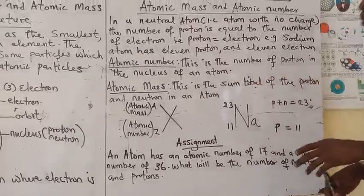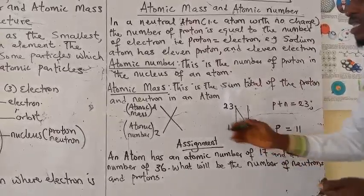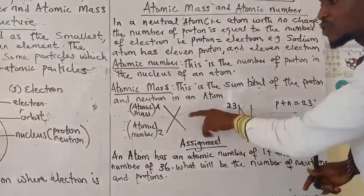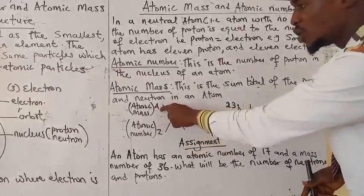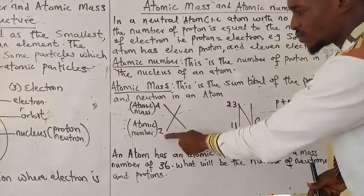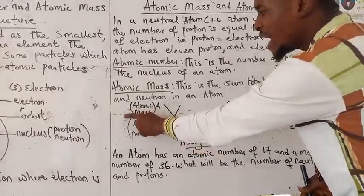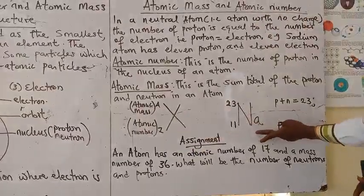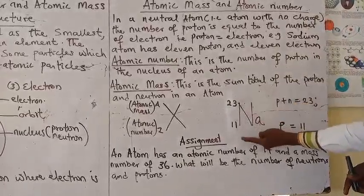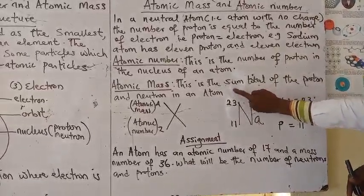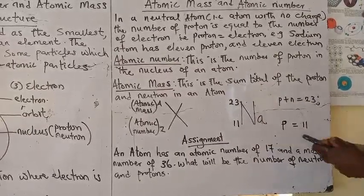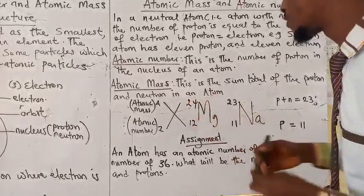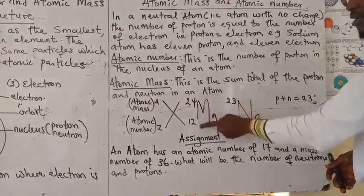To understand this concept better, let's look at what we call the chemical symbol. This is an element with symbol X. When you see an element written in this form, you see a number up — I'm using A here — and a number down, Z. The number up represents the atomic mass, while the number down represents the atomic number. For example, look at sodium: you see two numbers, one up and one down — this represents the atomic mass and this represents the atomic number. For instance, magnesium has 24 up and 12 down: 24 is the atomic mass and 12 is the atomic number.